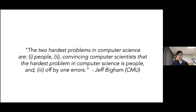I'm going to start off with this quote. This is Jeff Bigham from CMU who said: the two hardest problems in computer science are, first, people; second, convincing computer scientists that the hardest problem in computer science is people; and three, off-by-one errors. The last one is more of a joke. But this is more about self-reflection as computer scientists — that we perhaps have not been thinking too hard about people when we design these technologies.